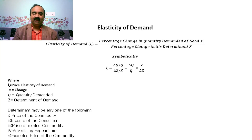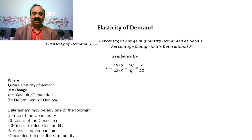Symbolically, E is equal to delta Q by Q divided by delta Z by Z, which is equal to delta Q by Q into Z by delta Z. Where E is equal to price elasticity of demand, delta is equal to change, Q is equal to quantity demanded, and Z is equal to determinant of demand.